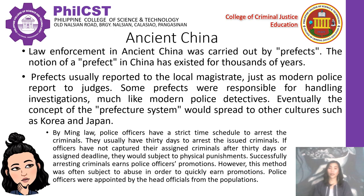Law enforcement in ancient China was carried out by prefects. The notion of a prefect in China has existed for thousands of years. The prefecture system developed in both the Chu and Jin kingdoms of the Spring and Autumn Period. In Jin, dozens of prefects were spread across the state, each having limited authority and employment period. Under the rule of Tang, a new judicial system emerged with prefects appointed by local magistrates, who in turn were appointed by the head of state — usually the emperor — and the concept of the prefectural system would eventually spread to Korea and Japan.